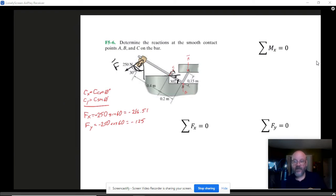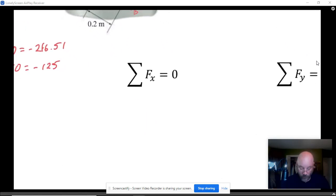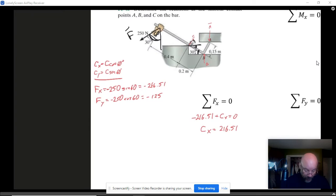Come over here with FX. We're going to have that X component of F, which was minus 216.51, and the only other X that we have is the CX, just like that. We can see that CX is going to have to be 216.51. If it were necessary, it will be, we could use that to figure out our value of C. Hint, hint.